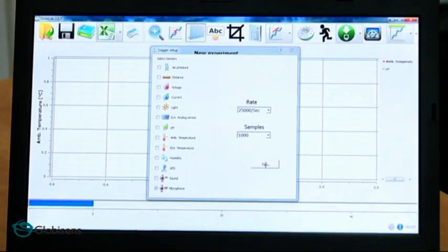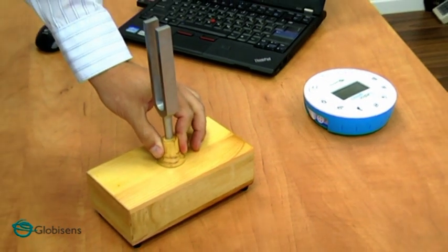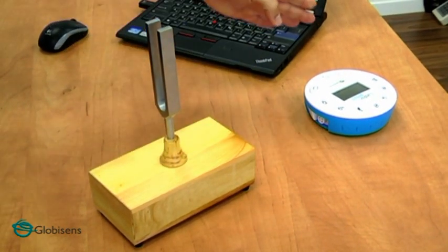Now we are ready to record. We will place the lab disc 10 centimeters away from the tuning fork. We will hit the tuning fork, wait a few seconds for the sound to stabilize, and record the sound.